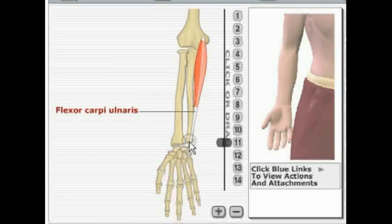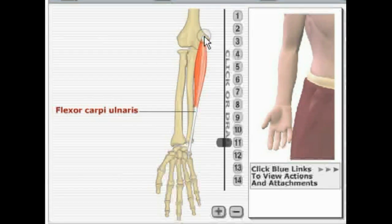Next is flexor carpi ulnaris. It originates on the medial epicondyle of the humerus and inserts into the medial carpals and metacarpal number five.